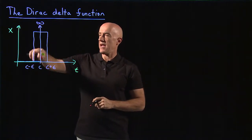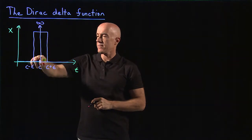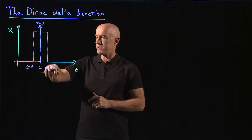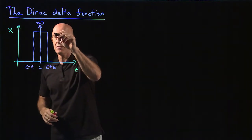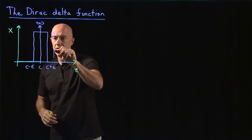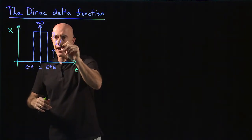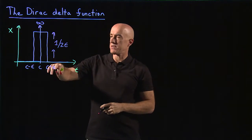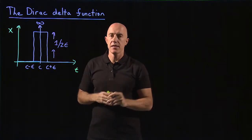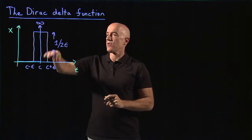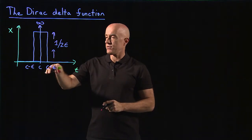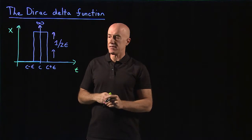The area under the Dirac delta function should be one. We want the area in this rectangle to be one. The width of the rectangle is two times epsilon, from c minus epsilon to c plus epsilon. So the height of this rectangle should be one divided by two epsilon. The area is two epsilon times one divided by two epsilon, which is one. As epsilon goes to zero, you end up with the Dirac delta function — a width of zero and a height of infinity.